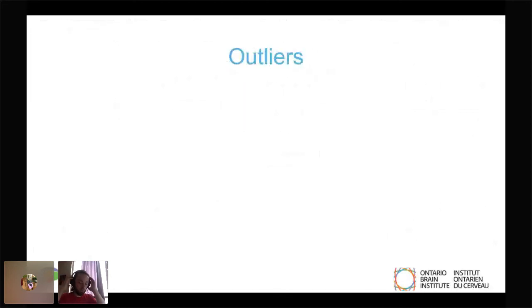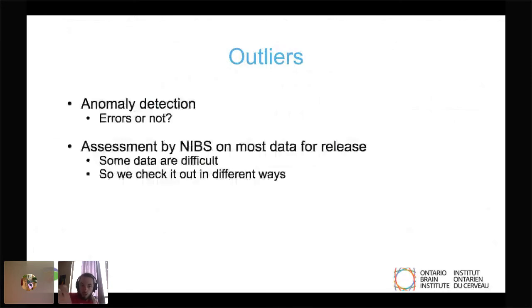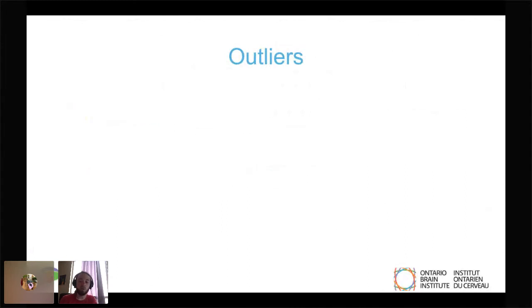This brings me to another piece of our pipeline, which is the outliers process. It is pretty important for us to establish whether anomalies are errors or not. We have a lot of data on a lot of individuals and they're very heterogeneous. We wanted to know are these very strange values real, reflective of something very specific, or is it an error in collection or an error in processing? The neuroinformatics and biostatistics team for most of the data releases, nearly all of them, perform what we call the outliers pipeline.